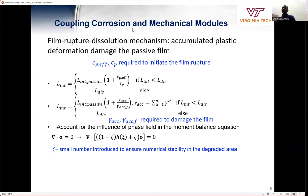Thus, we couple corrosion and mechanical models together. We are in the first equation, which we use the effective plastic strain, which is required to initiate the film rupture. And the second equation, we use the accumulated slip, which is required to damage the film.